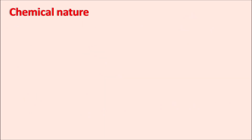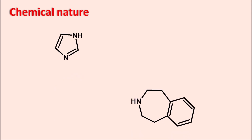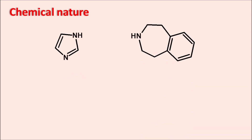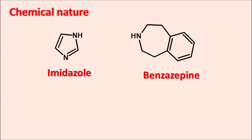Now let us see the chemical nature of Alcaftadine. This drug has a fused heterocyclic ring system. We can observe two rings within the structure of Alcaftadine. The first one is the imidazole and the second one is the benzene with azepine, that is the benzazepine. So Alcaftadine is a fused ring system of imidazole and benzazepine.